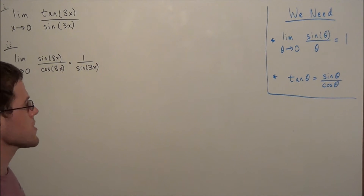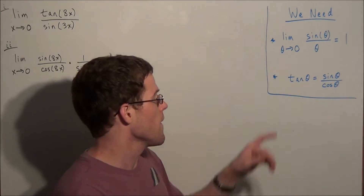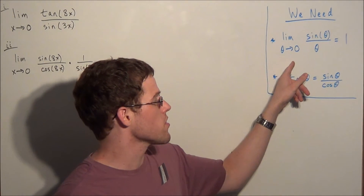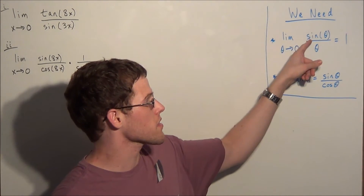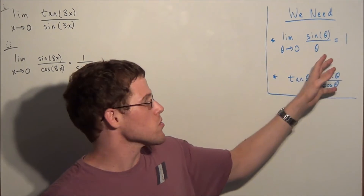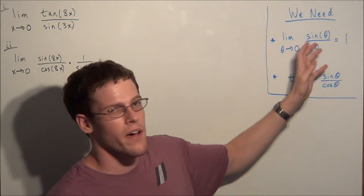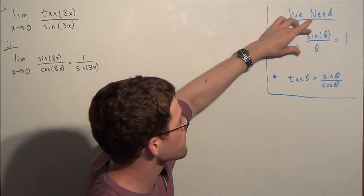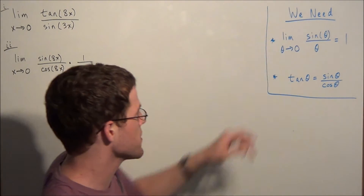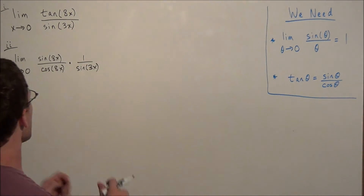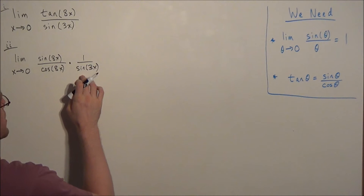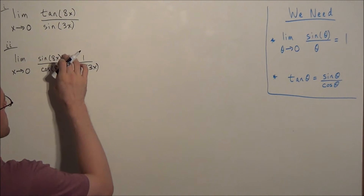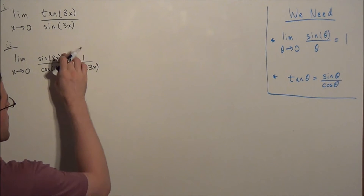For the next step, we want to make use of the limit: as theta approaches 0, sine theta divided by theta equals 1. We want to generate the form sine theta divided by theta. Since we have sine 8x and sine 3x, we would like to divide both expressions by x.